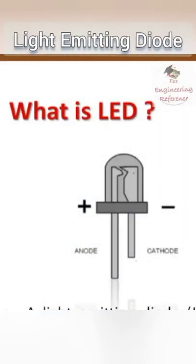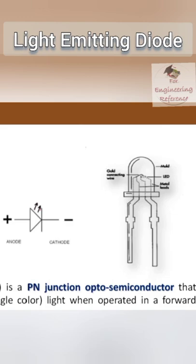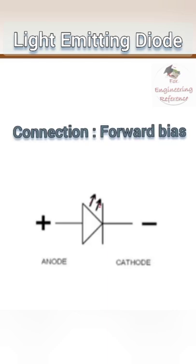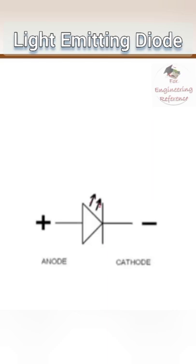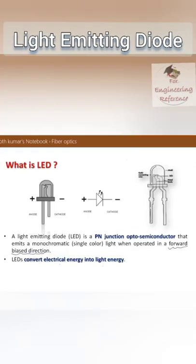A light emitting diode is a PN junction opto-semiconductor device that basically generates light. It emits the light over the junction when the PN junction diode is connected in forward biased condition. So basically it converts electrical energy into light energy.